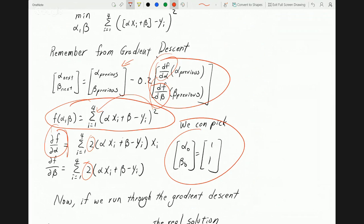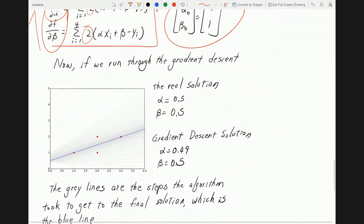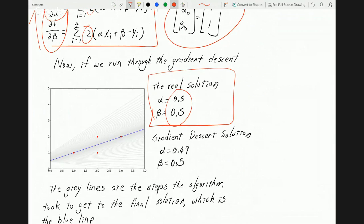Now we have this alpha and beta and the rest is basically just cranking through the math. Once you have the derivative you can now solve for gradient descent. What I did is I wrote a piece of software that essentially did this and I got this result. The real solution alpha and beta is 0.5 and 0.5. Gradient descent gave me 0.49 and 0.5, which I will say is a pretty good estimation.